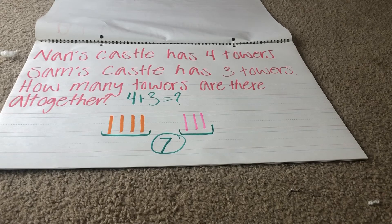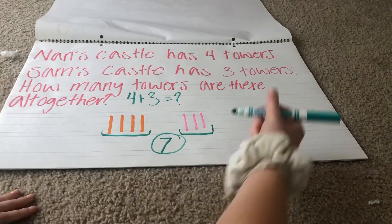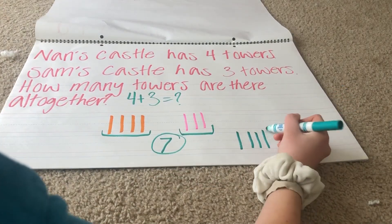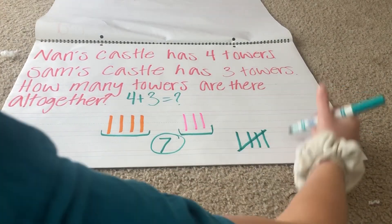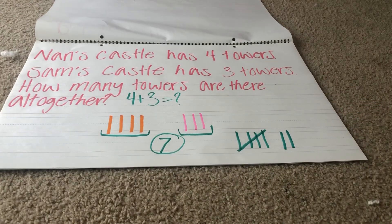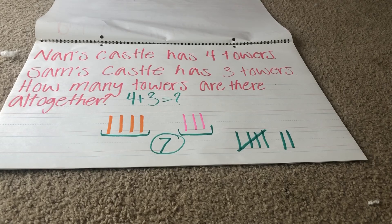Let me show you how we put all of our tallies together. Remember, when you have five, it's going to look different. So to show seven: one, two, three, four, five, six, seven. That's what that would look like in tally marks. Now you're going to do your own example of trying to find the total with different word problems.